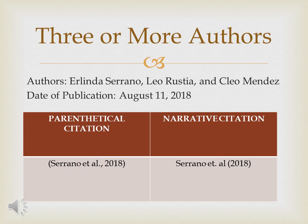Next, in narrative citation for three or more authors, we have: Serrano et al. (2018). There's not much difference except that the surname Serrano is now outside the parenthesis. You no longer put the dot-comma format — it just reads 'Serrano et al. 2018.' When you cite it in narrative form, it would be: 'According to Serrano et al. (2018), ...' and then their statement or idea. Saying 'et al.' automatically includes the other two authors.